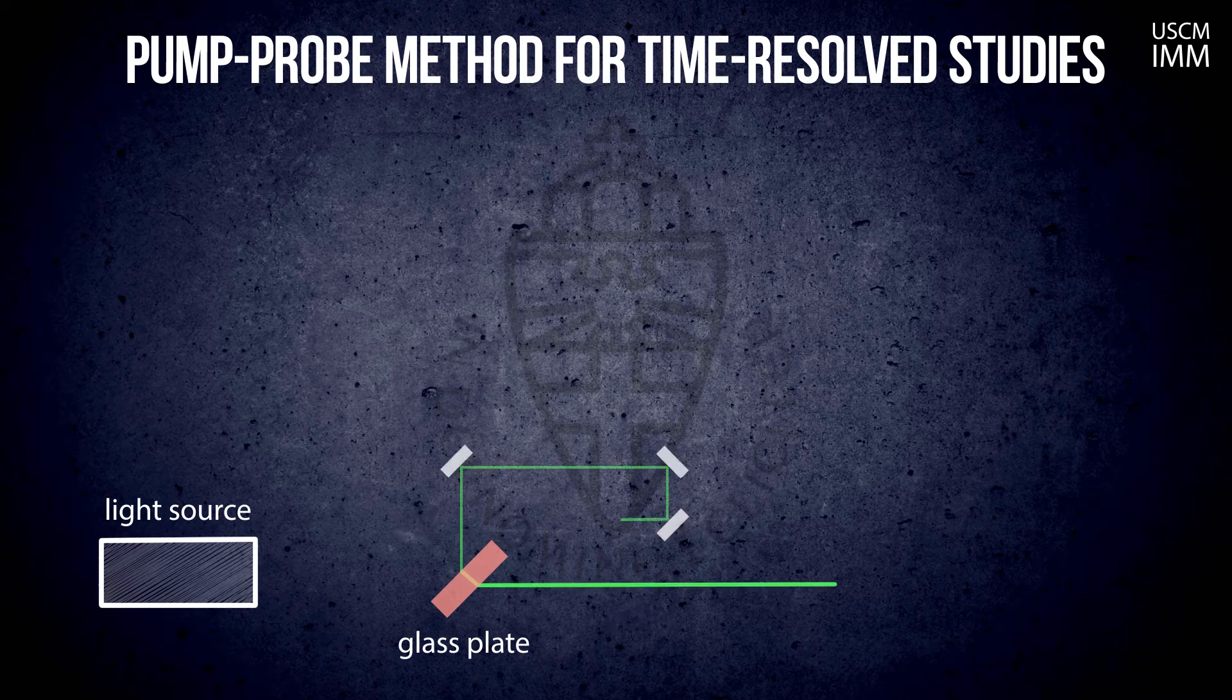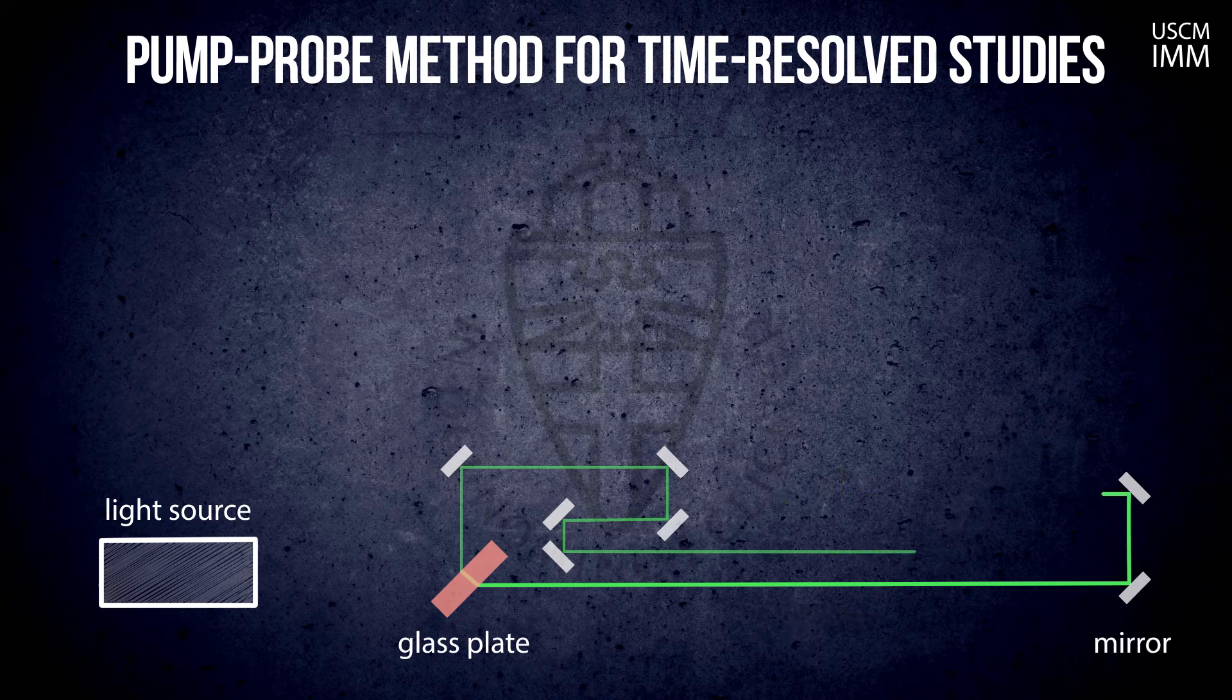The most intense flash will be used as a pump. The less intense flash is the probe. Pump and probe pulses follow different paths before they get focused on the sample.